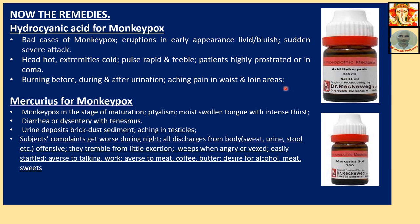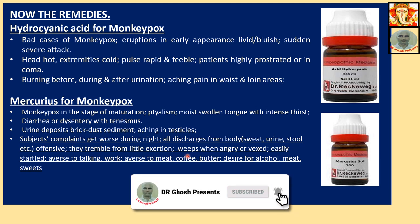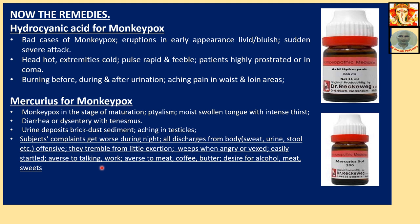Mercurius for monkeypox: indicated in the stage of maturation. Ptyalism — excessive saliva secretion. Moist swollen tongue with intense thirst. Diarrhea or dysentery with tenesmus. Urine deposits brick-dust sediment; aching in testicles. Subject complains greatly at night. All discharges from the body — sweat, urine, stool — are offensive. They tremble from little exertion, weep when angry and vexed, are easily startled, averse to talking. Averse to meat, coffee, butter, and alcohol. If these general symptoms are present, the patient is a Mercurius patient and Mercurius will act nicely.